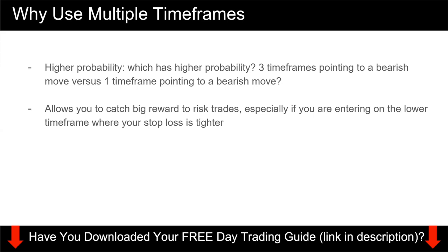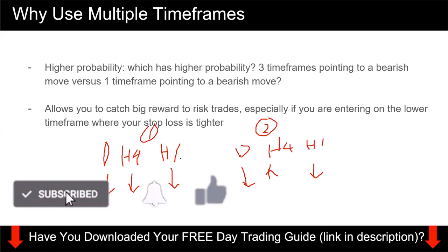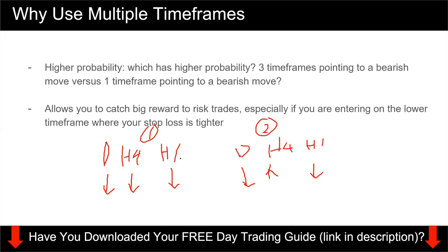So if the daily chart says it's bearish, the H4 says it's bearish, and the H1 says it's bearish, where do you think price is likely to go? That scenario has higher probability than one where your daily is down, your H4 is up, and your H1 is down. So that's why you want to use multiple timeframe analysis — you want to align multiple timeframes together so the market is bearish across all of them. That's where you get your highest probability trade setups.